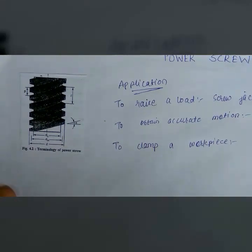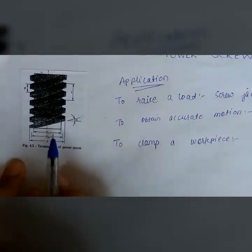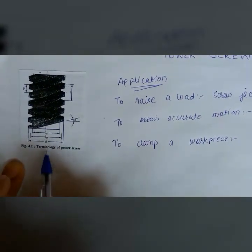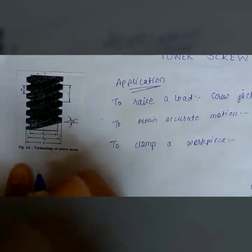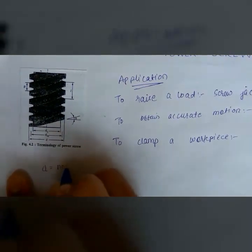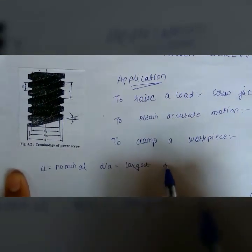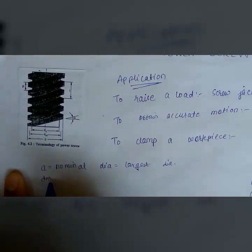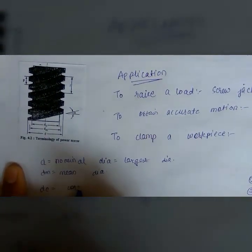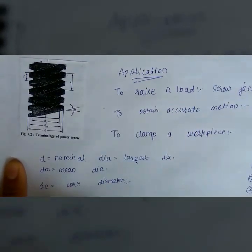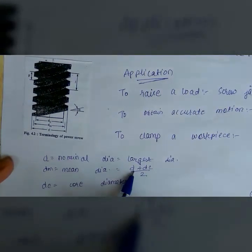The terminology of a power screw: we have the following terms — d, dm, dc, pitch, and lead. 'd' stands for nominal diameter, which is the largest diameter of a power screw. 'dc' is the core diameter, the minimum diameter. 'dm' is the mean diameter, equal to (d + dc) / 2, which is the average of nominal and core diameter.